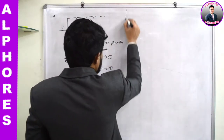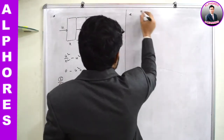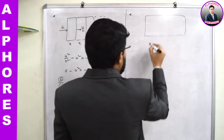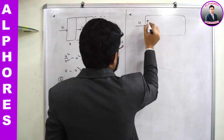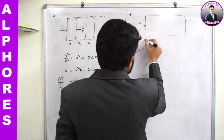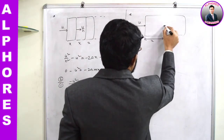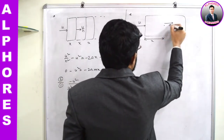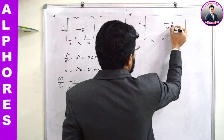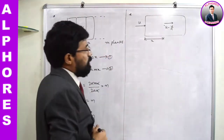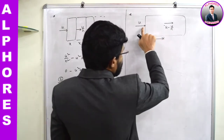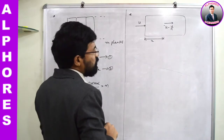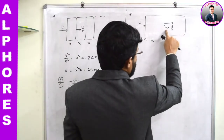Now let us discuss one more point connected with this. There is a wooden block. Initially, when the bullet is entering, its velocity is u. It has penetrated through a distance equal to x, and at that point its velocity is reduced by 1/nth — so the velocity is u - u/n.